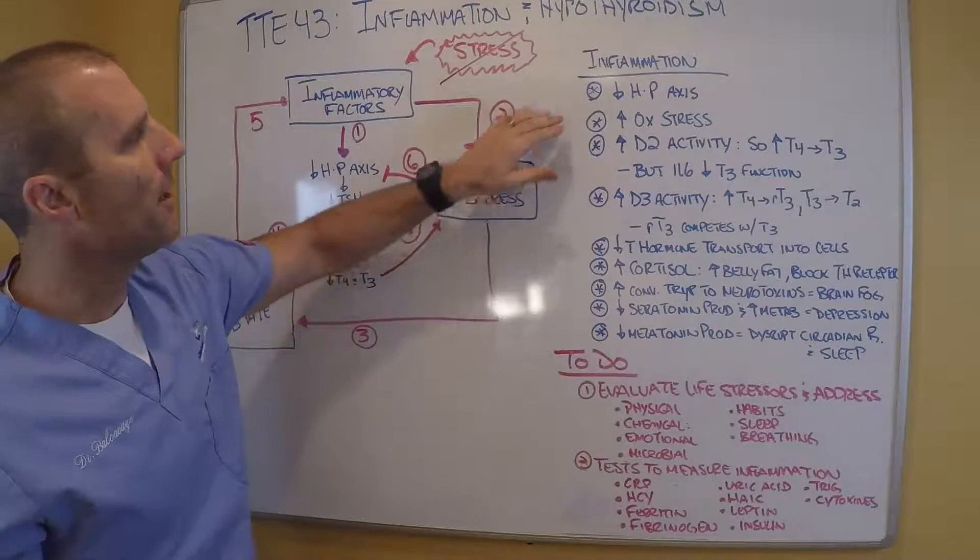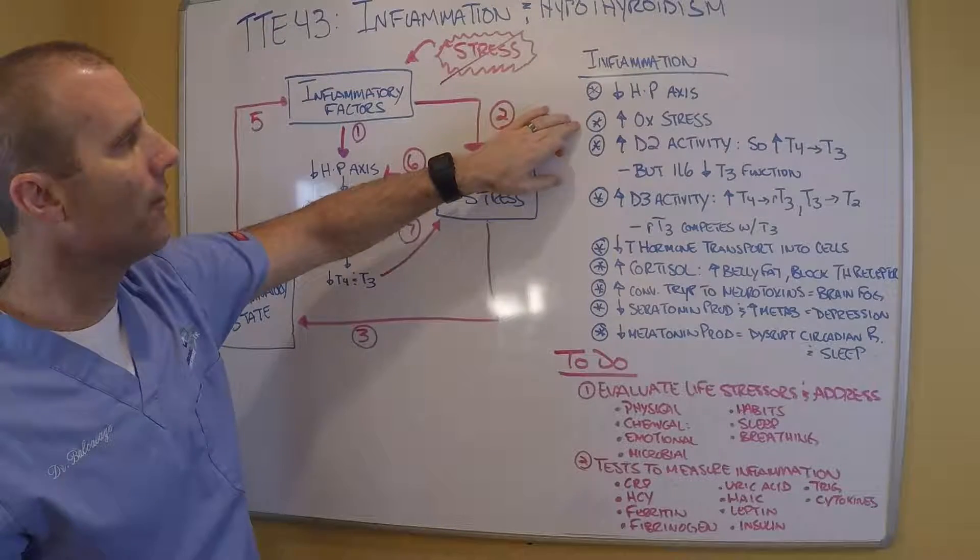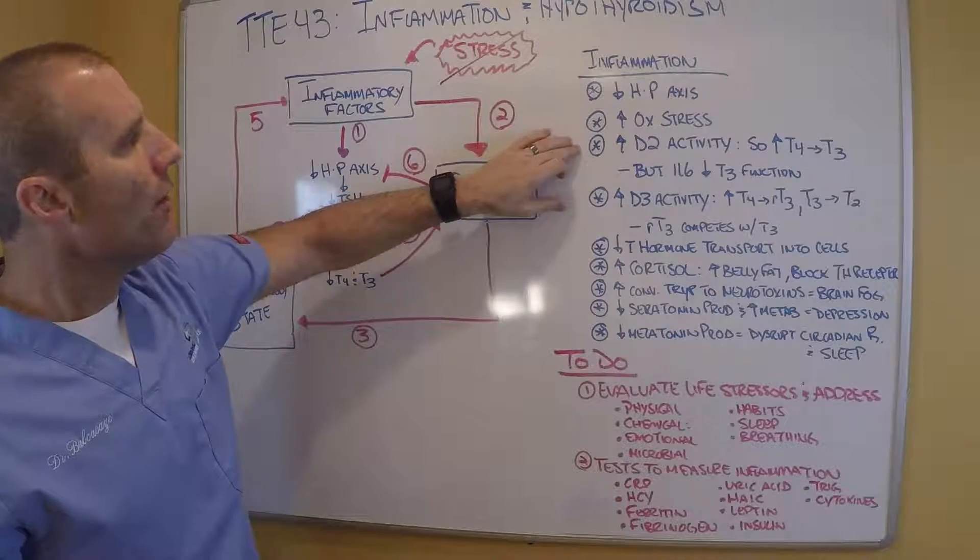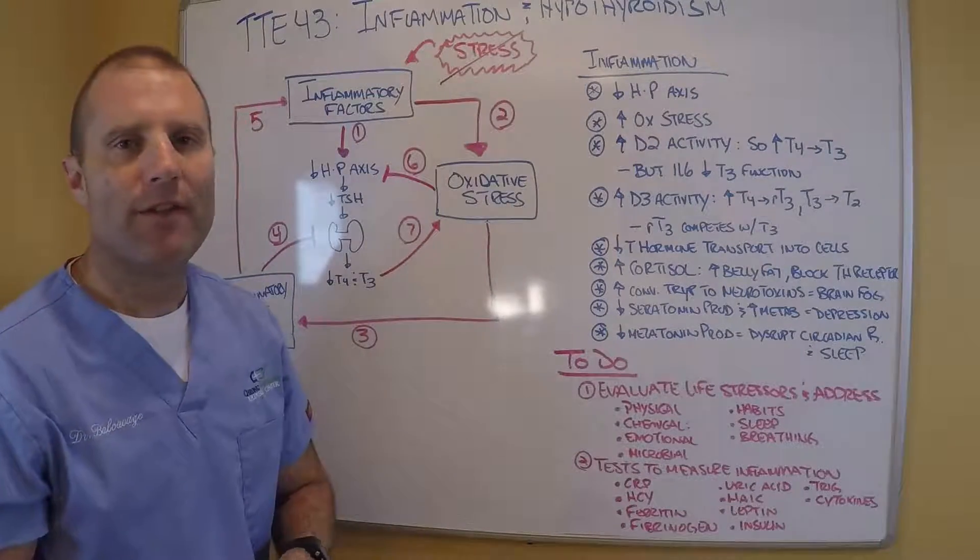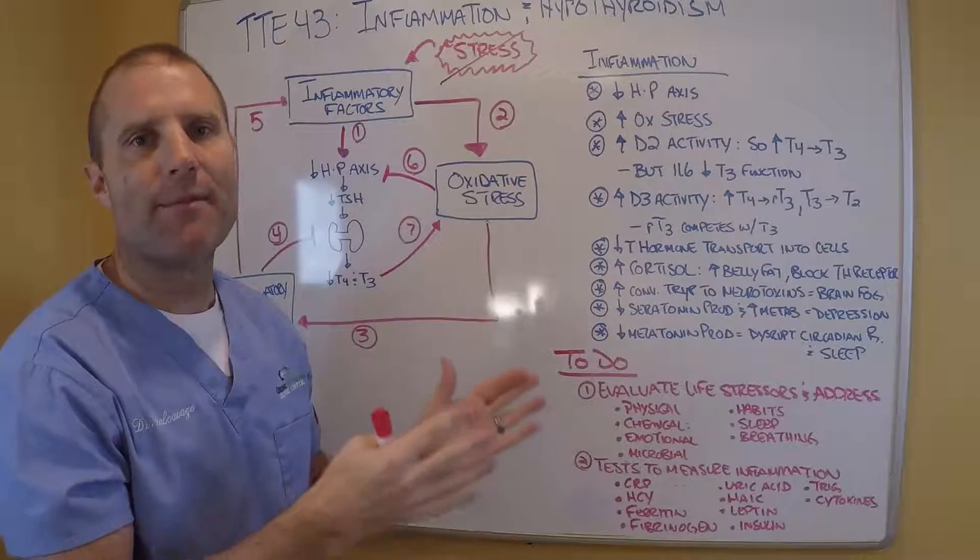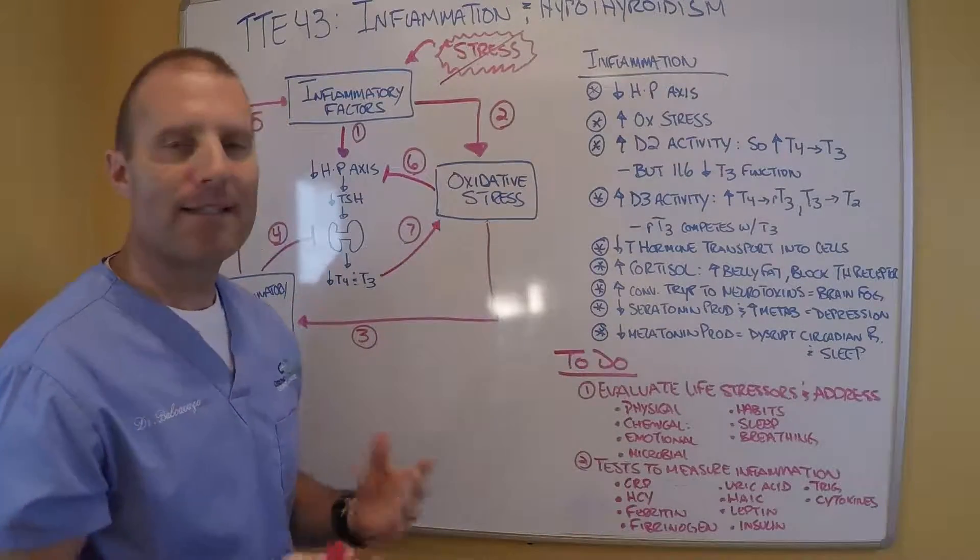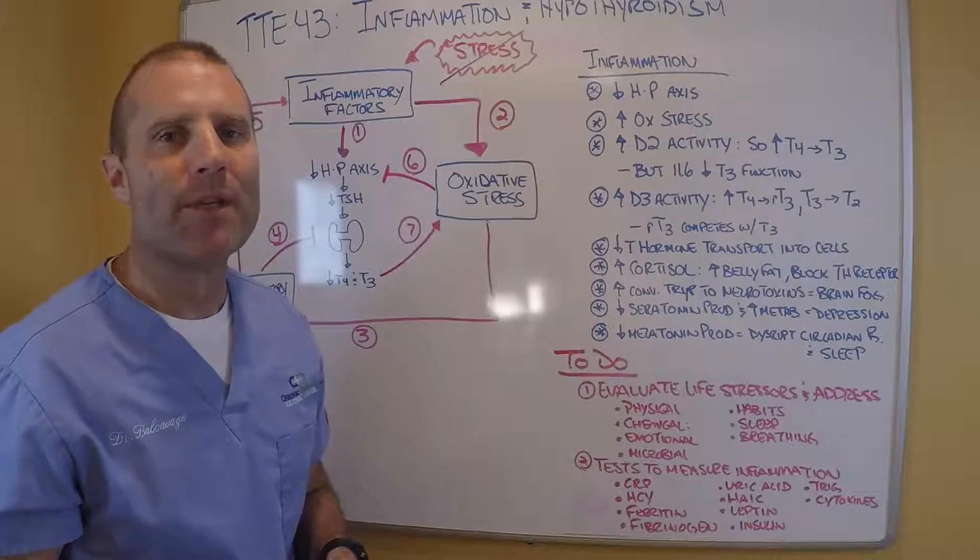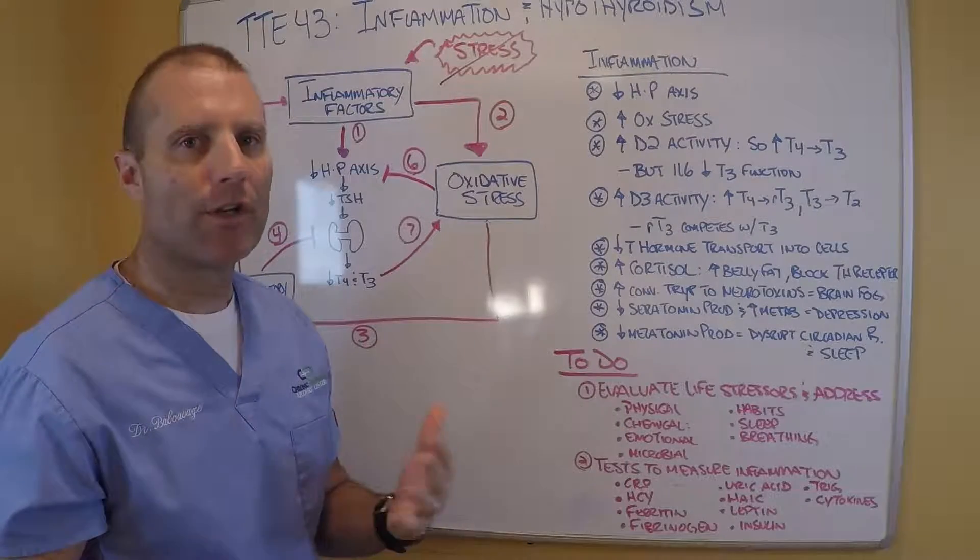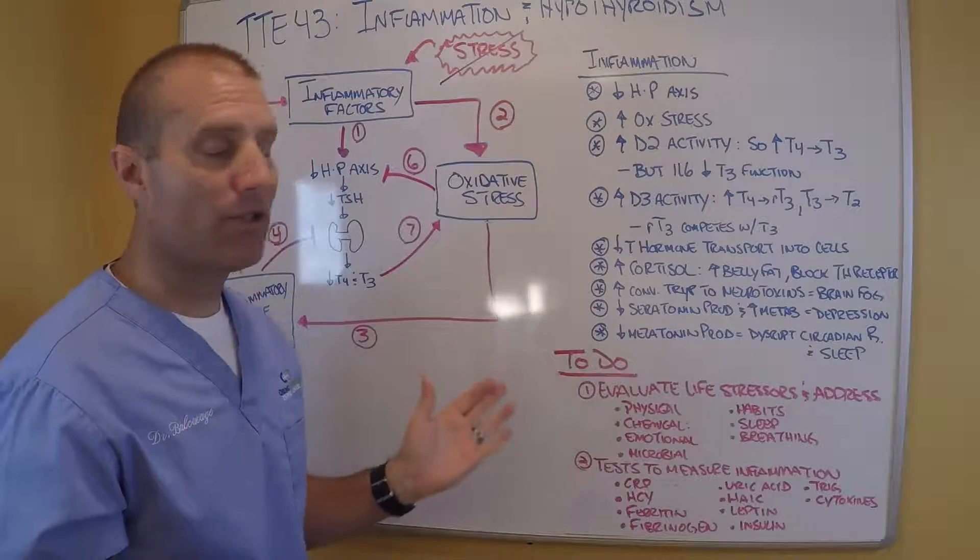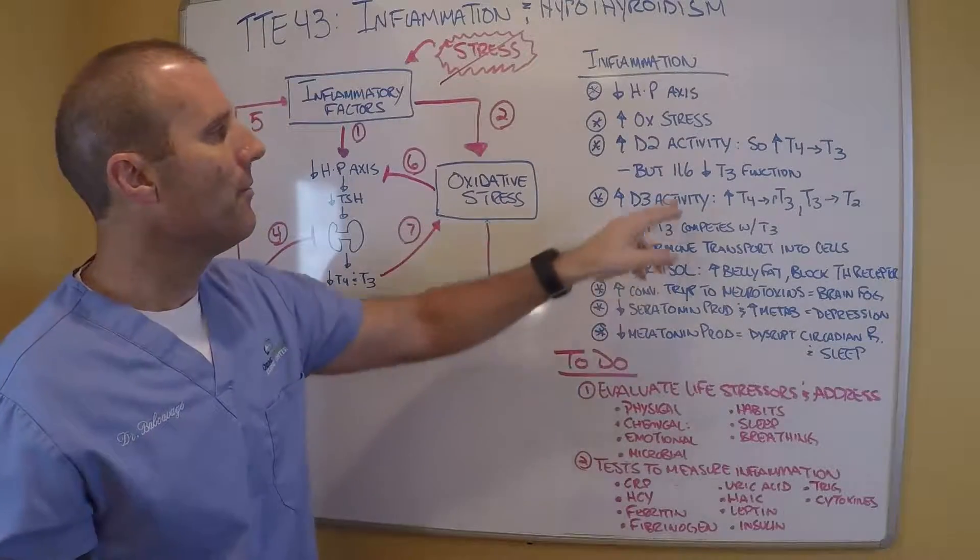But let me talk about a couple of other things. So in this piece, I talked about decreased HPT axis, I talked about increased oxidative stress. When there's inflammation, we also get increased deiodinase 2 activity. That's the enzyme that converts T4 to T3 in the body. And that sounds good because T3 is the active form. So it's good, probably short run, but if you over-convert T4 to T3, you're going to quickly run out of T3, especially if it can't transport into the tissues. But here's another thing that most people don't know.